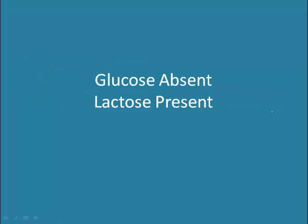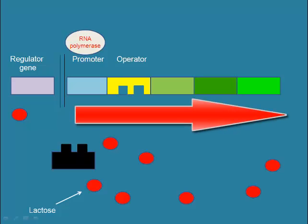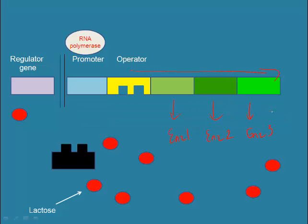What happens when glucose is absent but lactose is present? This is when the lac operon turns on. When glucose is absent and lactose is present, it is desirable to have the enzymes that break down lactose. RNA polymerase should be allowed to move past the operator and transcribe the structural genes. The repressor must be inhibited so that it cannot bind to the operator.